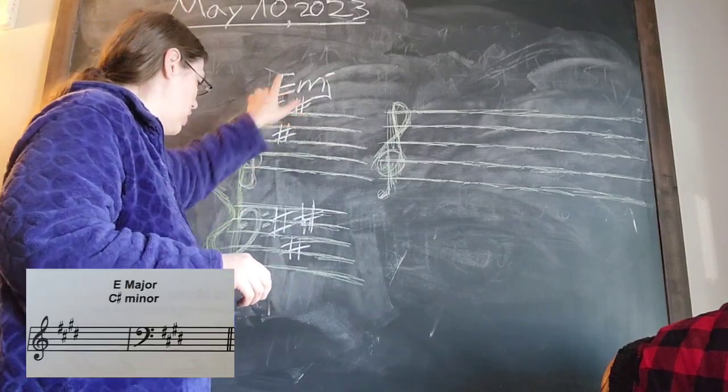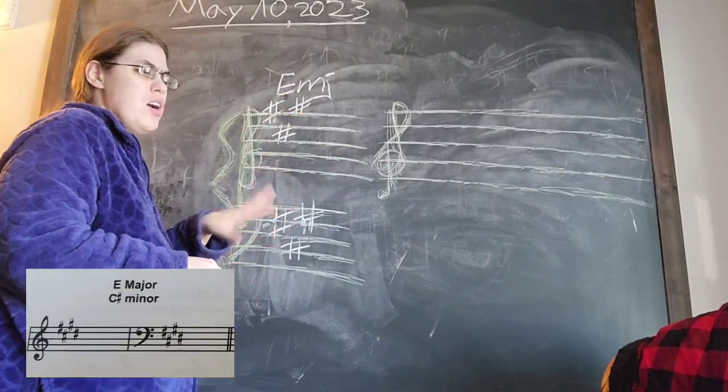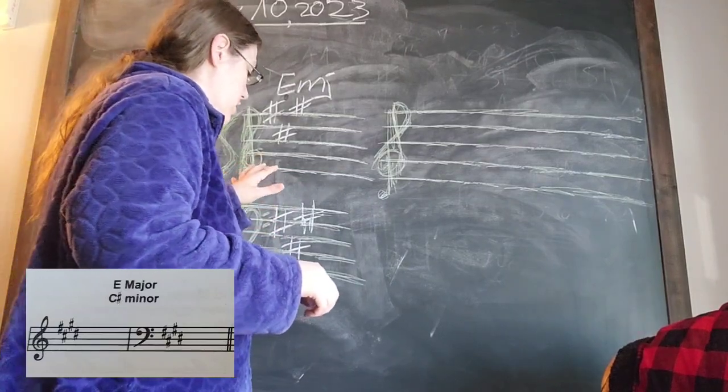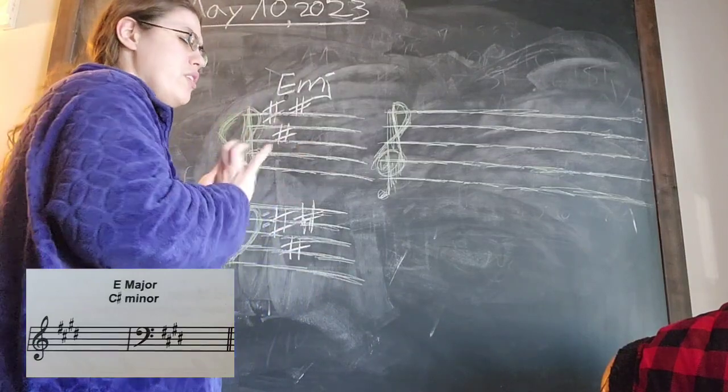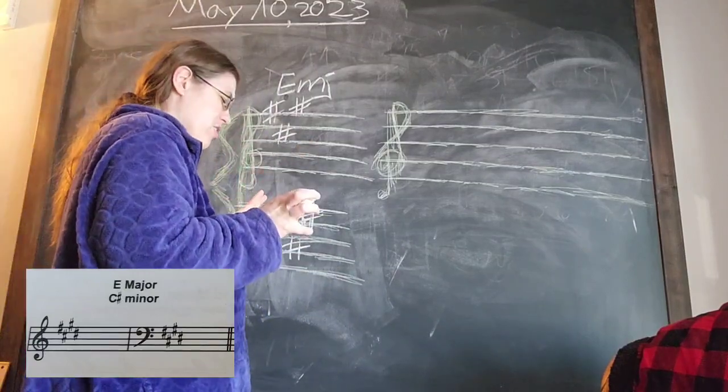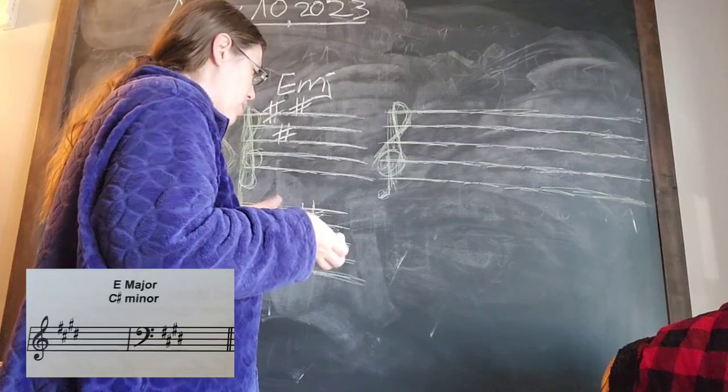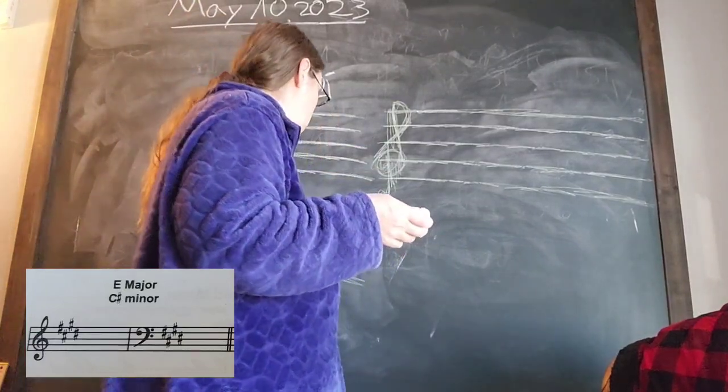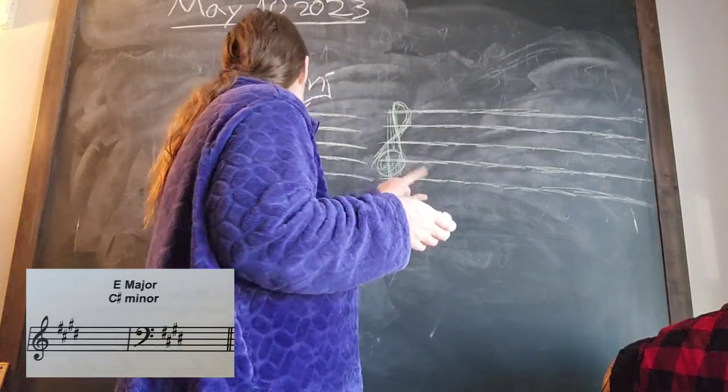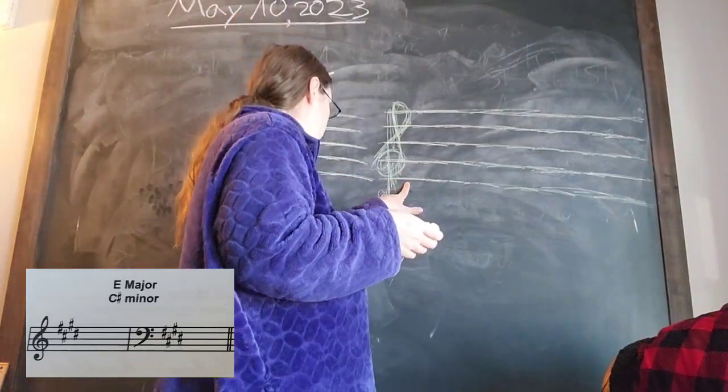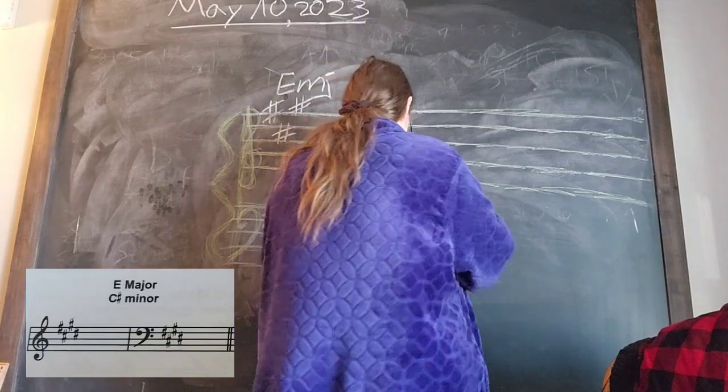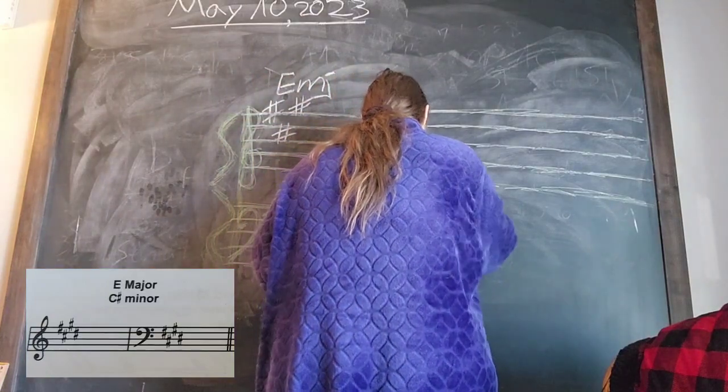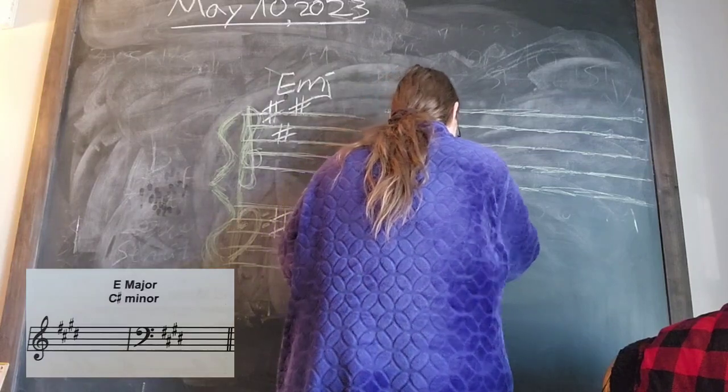Now we are looking at the key of E major. We have all these sharps plus there's going to be another one added. I'm hoping at this point you're starting to see the pattern of what it is that we're doing, but I'm just going to continue this for people who are not getting it right away. So we are going to start on the E and we're just going to write out all of our notes.